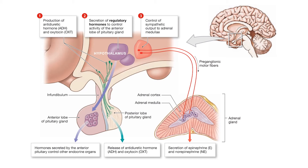The adenohypophysis produces thyroid stimulating hormone, adrenocorticotropic hormone, follicle stimulating hormone, luteinizing hormone, prolactin, and growth hormone. The pars intermedia produces melanocyte stimulating hormone, and the neurohypophysis produces antidiuretic hormone and oxytocin. The pars intermedia is in between the anterior and posterior lobes.